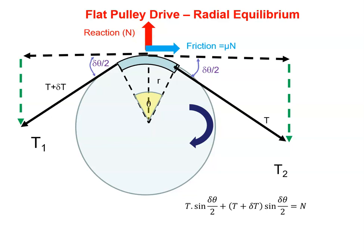However, this reaction force N must be equal and opposite to these two forces here. So this is a right angle triangle, so sine Dθ over 2 is opposite over hypotenuse. So therefore, I could say that in this case, the hypotenuse, T plus DT times sine Dθ over 2, plus here, T is the hypotenuse, so T times sine Dθ over 2.